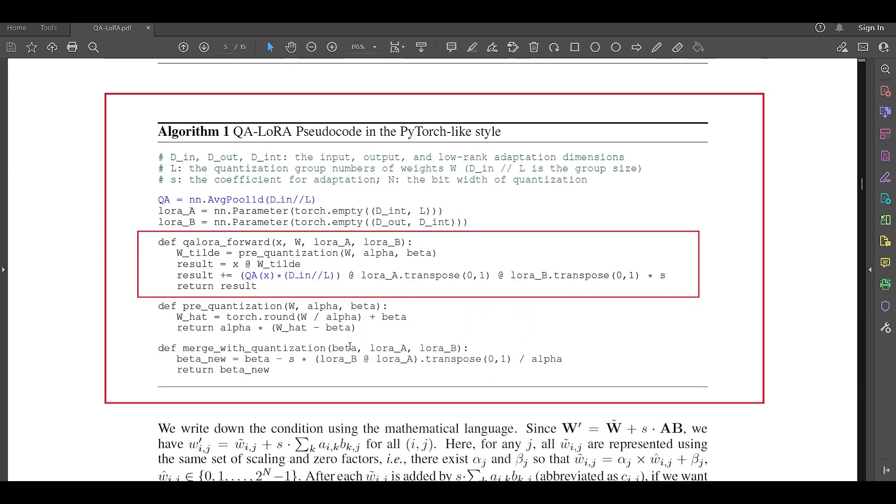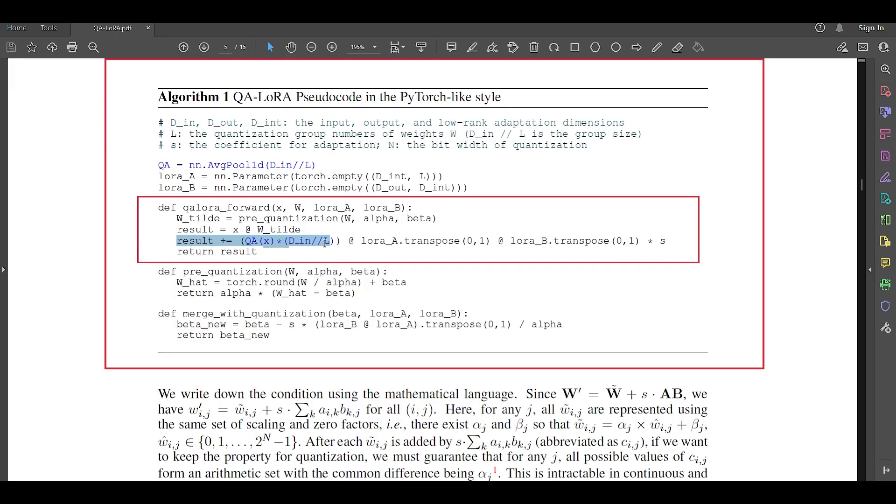So, the overall goal of this pre-quantization method, that is, this whole operation, is to quantize the weights in a way that preserves the original scale and centers of the weights, which can be crucial for maintaining the model's performance post-quantization. And now, coming back to this important method here, QA-LoRA forward. So, first, we apply or invoke pre-quantization method that we discussed earlier, and we get W tilde. And then, the input X is then matrix multiplied with W tilde here in this line. And the next line, this result plus equal to this line, this line computes a low-rank-adapted term by applying the average pooling QA to X, then scaling it, and then performing matrix multiplication with LoRA-A and LoRA-B, both transposed. And this term is then scaled by S and added to the result.